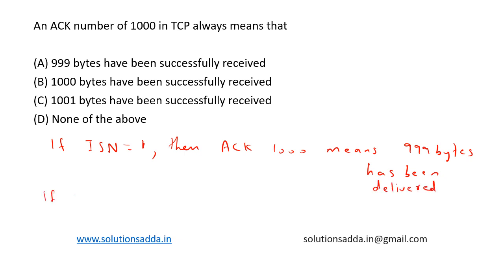If the initial sequence number is equal to 0, then an acknowledgement number of 1000 means that 1000 bytes have been delivered.